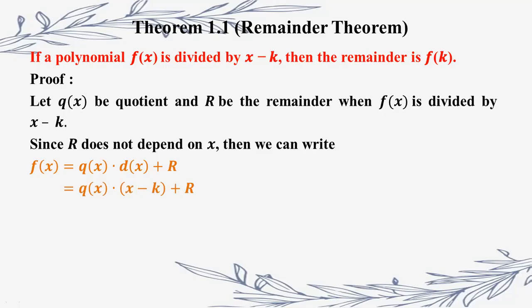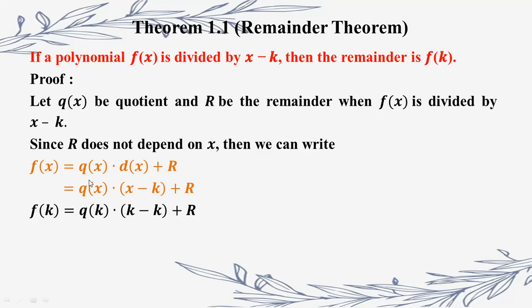This polynomial is x minus k. When you use the word, you have to apply it for the term. This means how much you can roll, and that's what we're going to do.